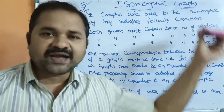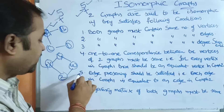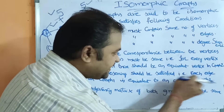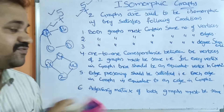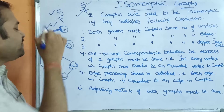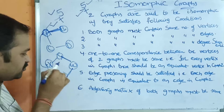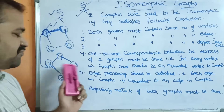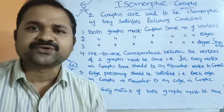You will get perfect clarity while solving the problems. Totally in this video we are going to solve two problems. The fifth condition is edge preserving should be satisfied. Each edge in graph one must be equivalent to an edge in graph two. We need to find out which edge in graph one is equivalent to which edge in graph two.